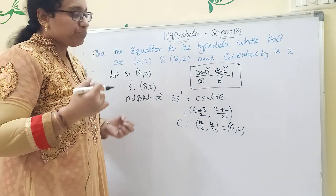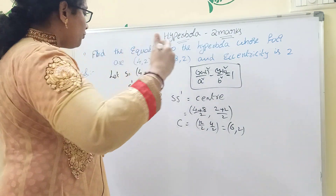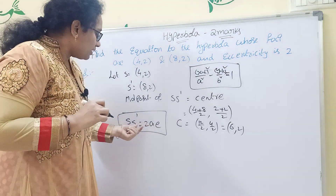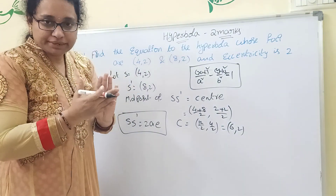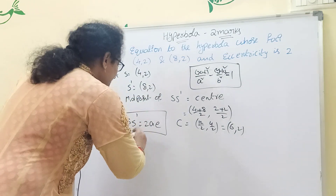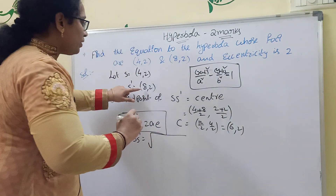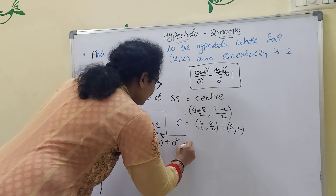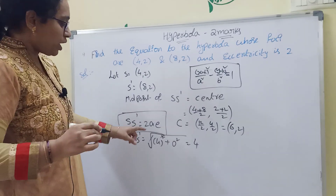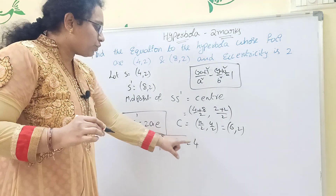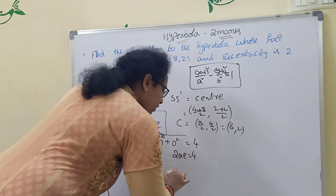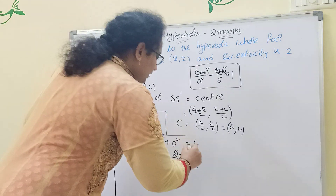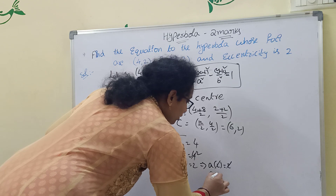To find the value of 'a', we use the formula SS' = 2ae. The distance SS' equals the square root of (8−4)² + (2−2)², which is the square root of 16, equal to 4. So SS' = 4 = 2ae. Then ae = 2. Since eccentricity e = 2, we get a × 2 = 2, so a = 1.